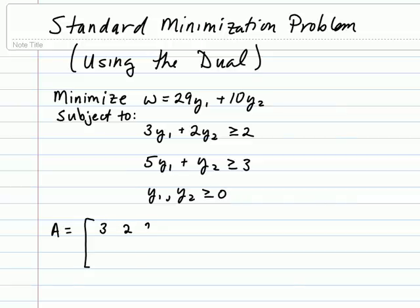3, 2, 2, 5, 1, 3, as well as the coefficients and constants from the objective, which will be written in the same column format with this column for y sub 1, this column for y sub 2, and this column for the constant. So here we would have 29, 10, and 0.